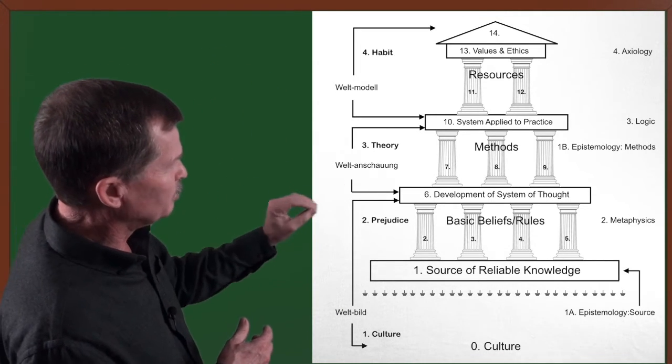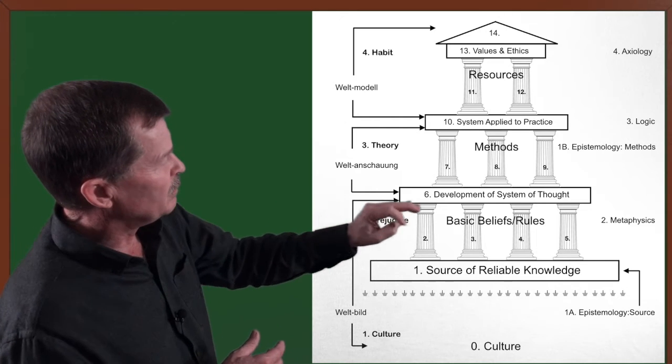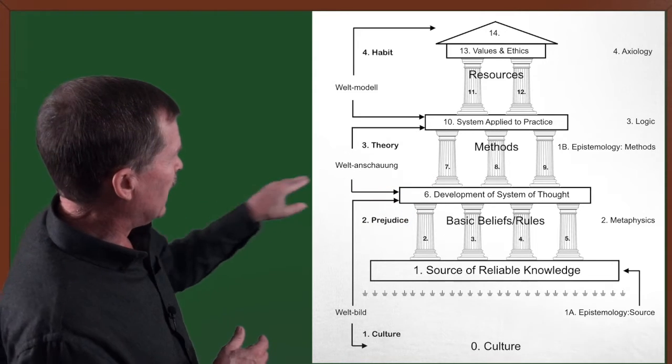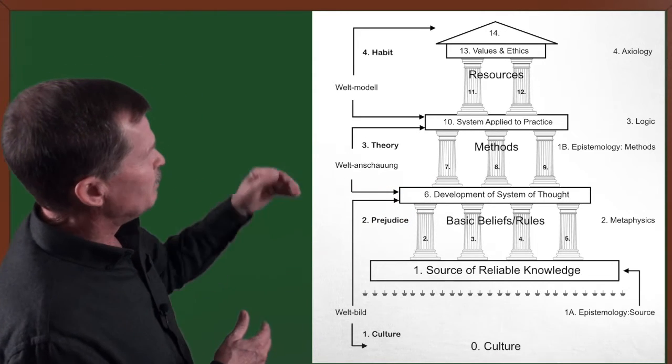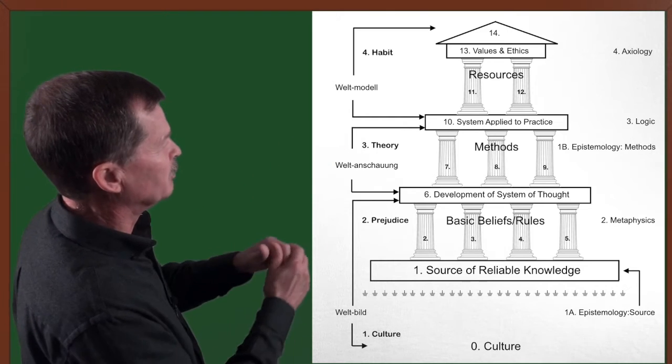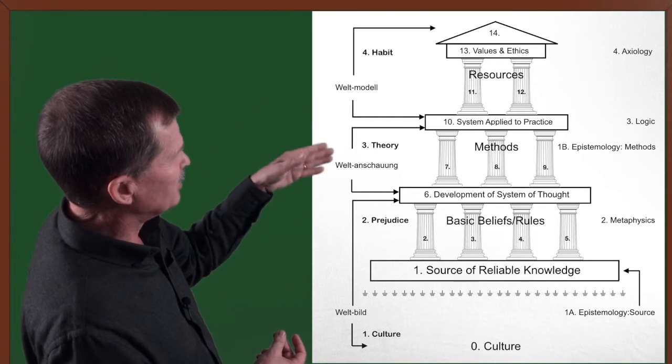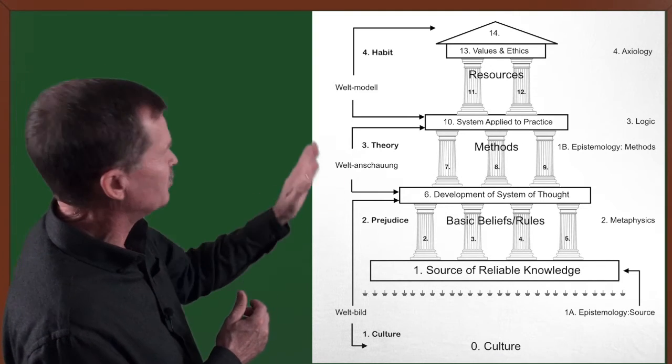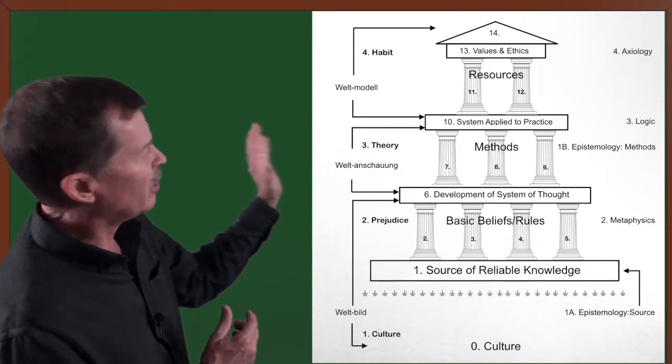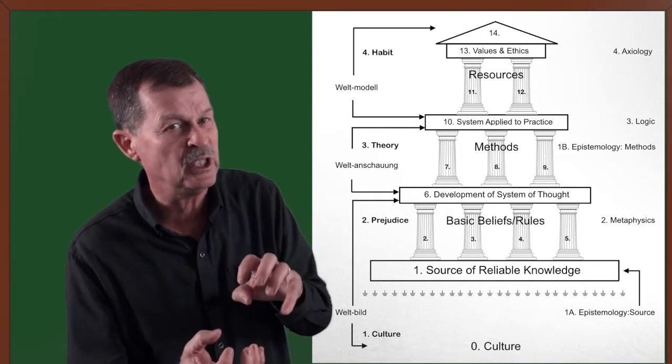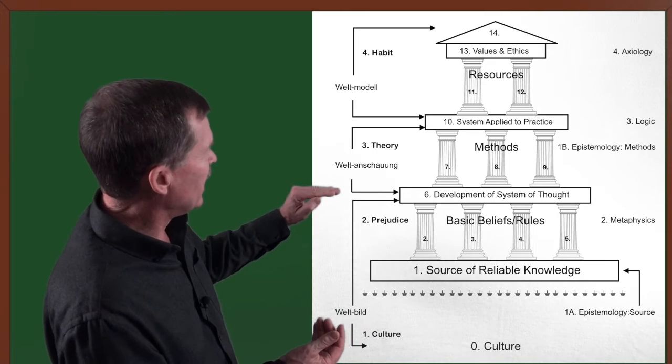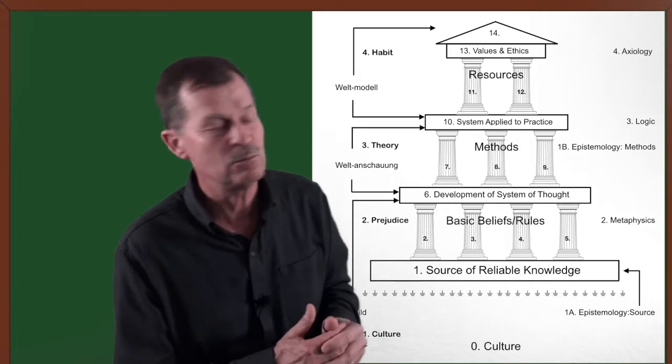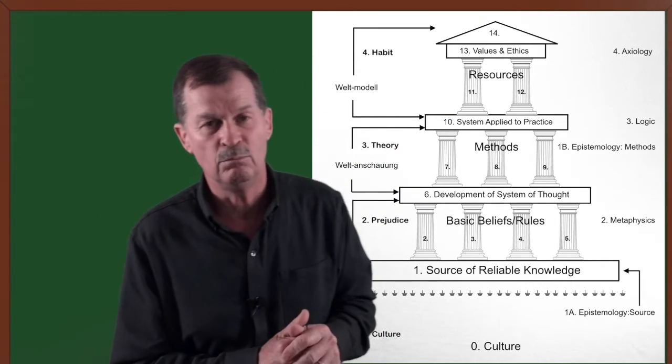Back to the house. We've now covered weltbild, which is the culture. We've covered epistemology, which is the source of our knowledge. And that is a very important choice to make because out of that source, we build our metaphysics, which is a response to theology, a response to ontology, and a response to universal science, building our basic beliefs. And those are our prejudices. So now we've completed the culture stage of the house. We've completed the prejudice stage of the house. And now we're going to be moving up to the next stage, which would be the methods employed.